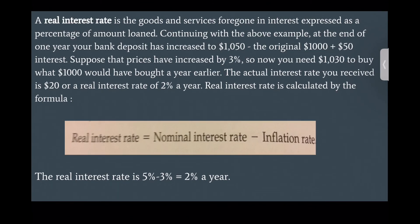The real interest rate is goods and services foregone in interest expressed as a percentage of the amount loaned. At the end of one year, your bank deposit has increased to $1,050 — the original $1,000 plus $50 interest. Suppose prices have increased by three percent, so now you need $1,030 to buy what $1,000 would have bought a year earlier. The actual interest you received is $20, so the real interest rate is two percent a year. The real interest rate is calculated by the formula: real interest rate equals nominal interest rate minus inflation rate, which is five percent minus three percent equals two percent a year.